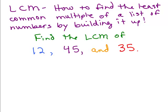The first number in the list is 12, and I'm going to write the prime factorization of that. As a reminder, the prime factorization of 12 is 2 times 2 times 3. For 45 it is 3 times 3 times 5, and for 35 it's 5 times 7. We've already gone over how to find the prime factorization. Notice I'm not using exponents in this method.